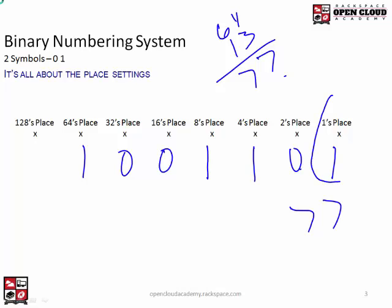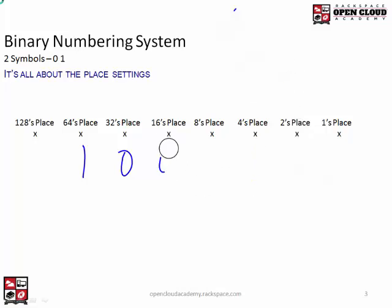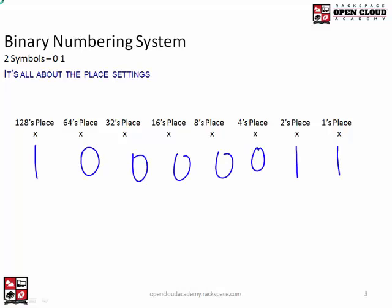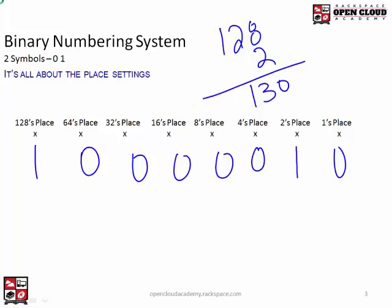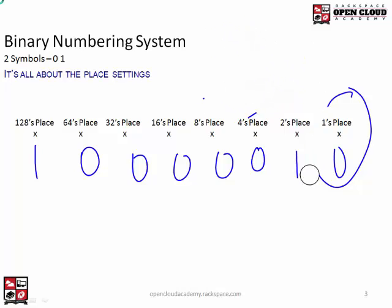Notice that when the ones place is set, it's always going to be an odd number. The only way to get an odd number in binary is to have the ones place set. For example, 1, 0, 0, 0, 0, 0, 1, 0 — that's 128 plus 2, which equals 130. Notice the ones place is not set and this is an even number. So if the ones place is set, it has to be odd, no matter what.